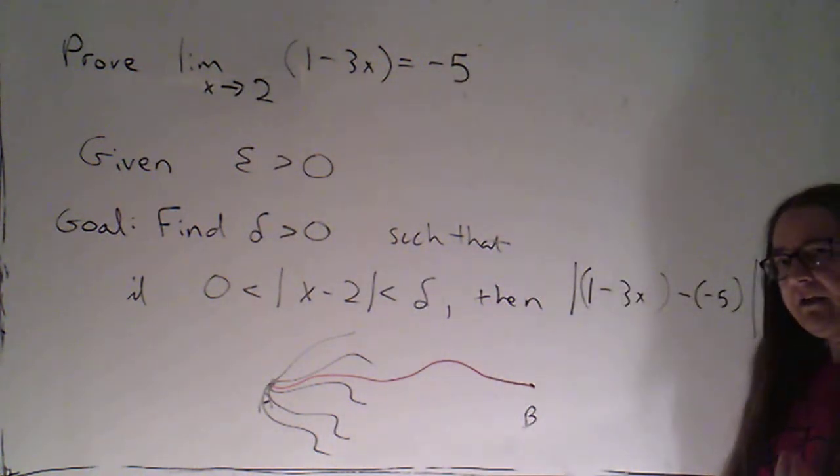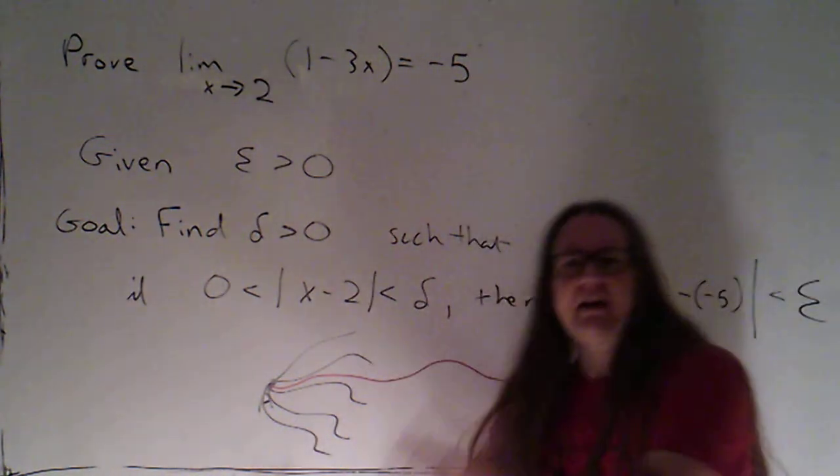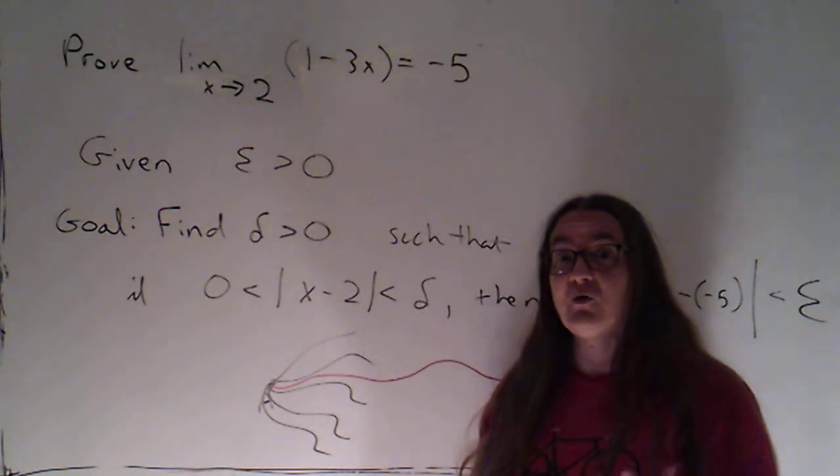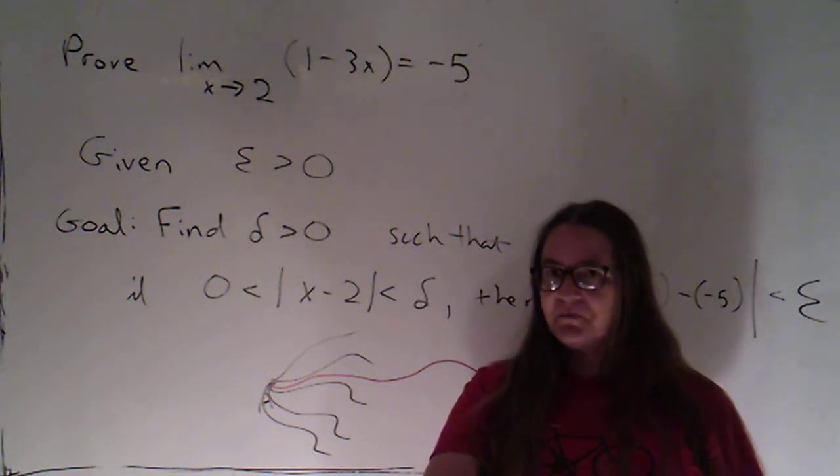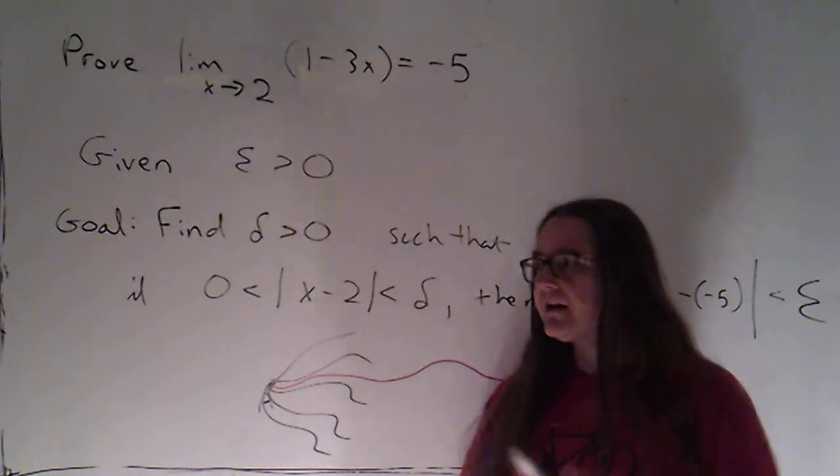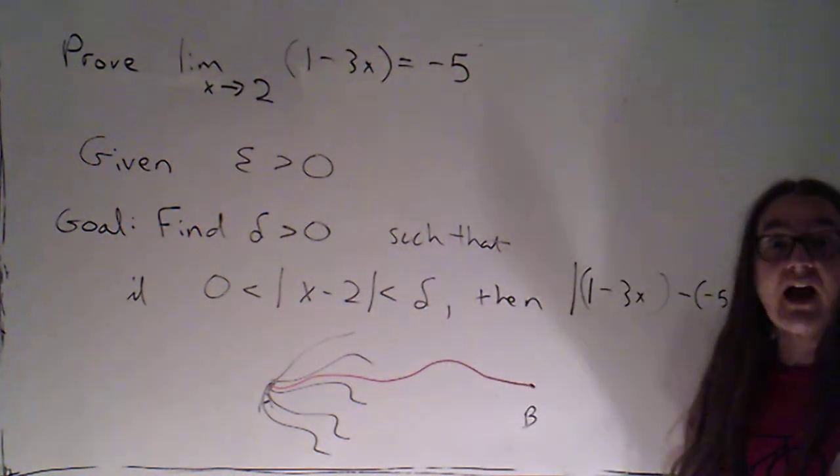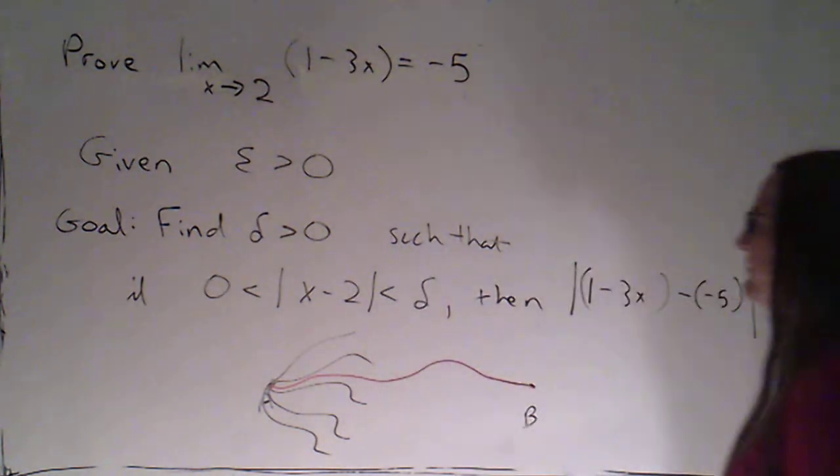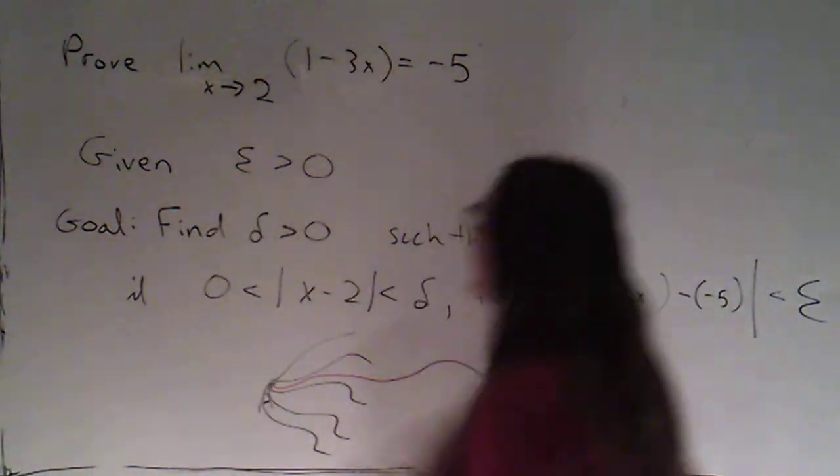And in math, there are lots of things that we can do that we can undo, that we can go in either direction. But there are lots of other things that we can do that we can't undo, that we can't just reverse. So after we find a delta that we think might work in our informal work, we're going to do a formal proof to basically check and make sure that the route that we took was not a one-way street—that the delta that we found actually does work.